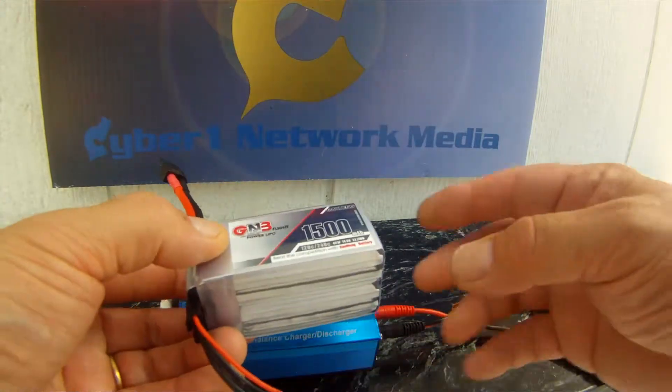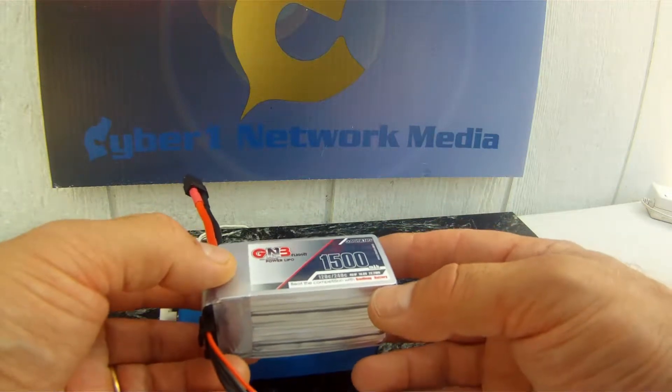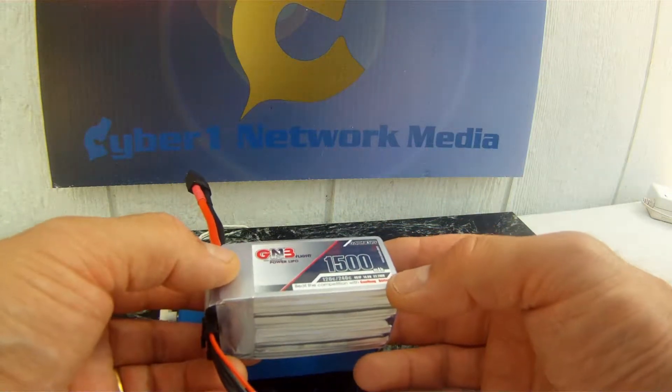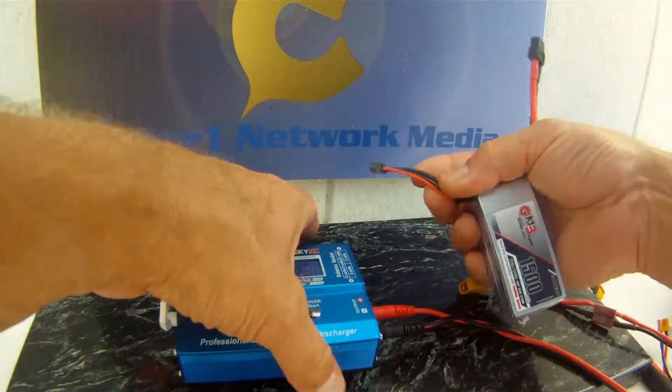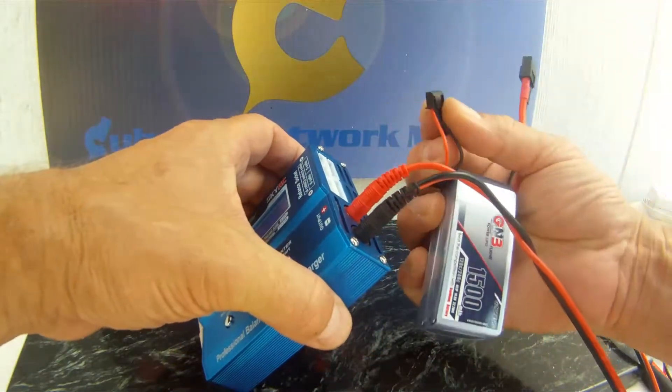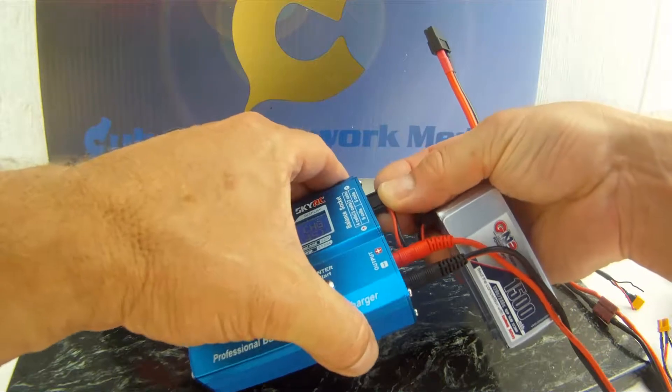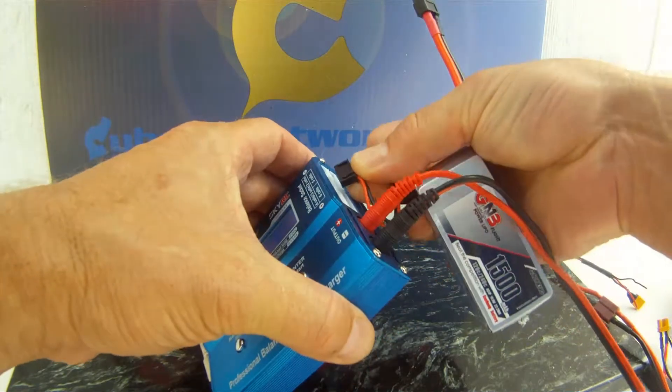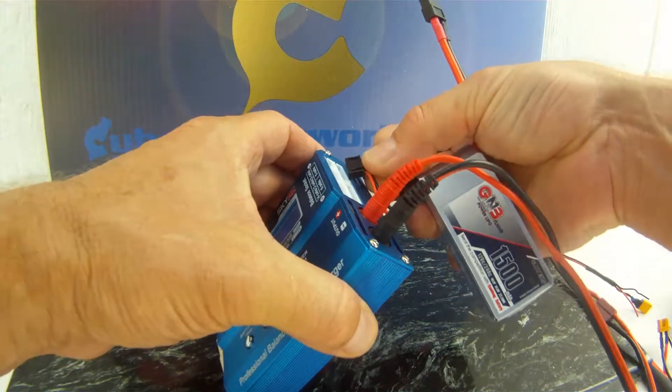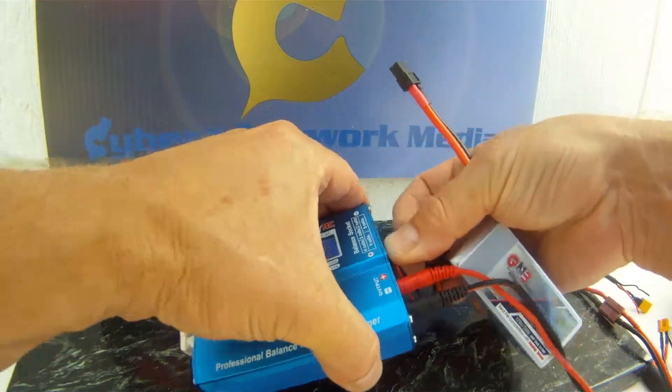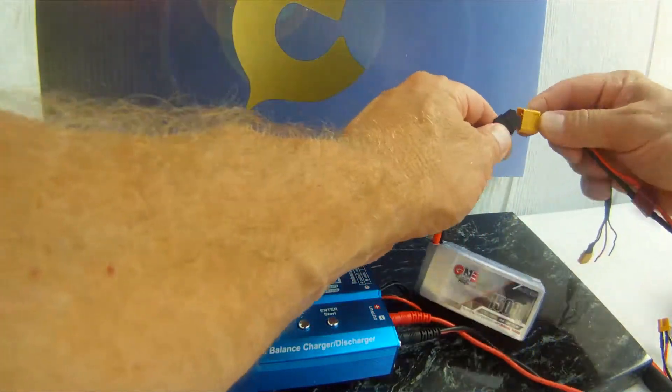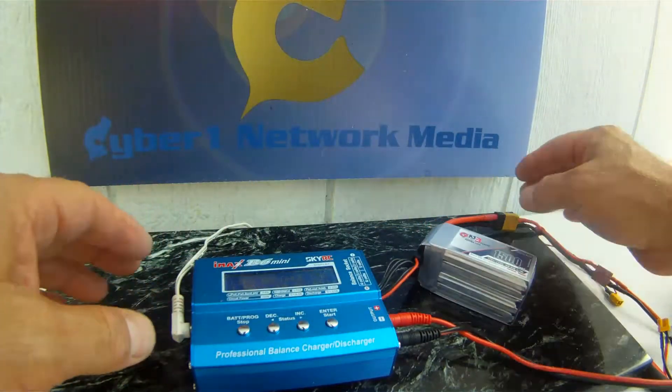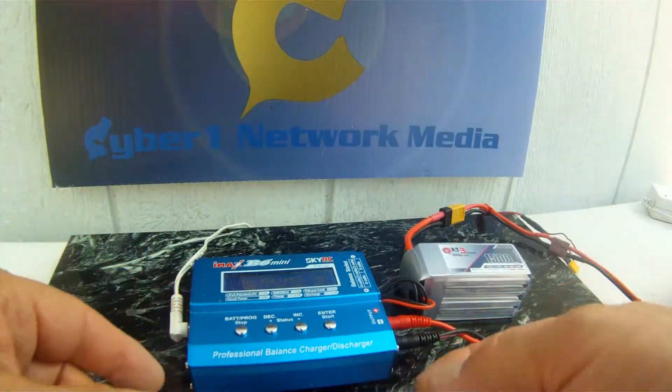We're going to try to balance charge up the Crazy Pony 1500 milliamp 4S LiPo. That's a 120C unit here so it should go pretty fast. So we're going to plug the balance connector in. So this is the 4 pin balance connector. So right here. And we'll lay that down. We're going to plug in this XT60 into there.